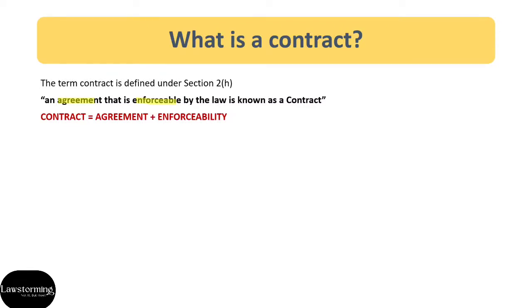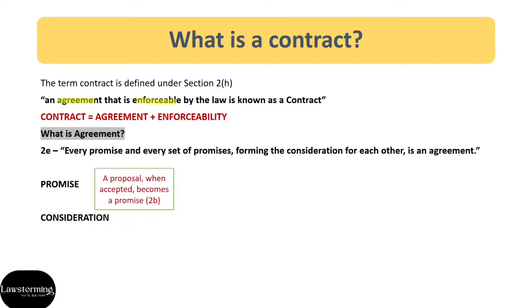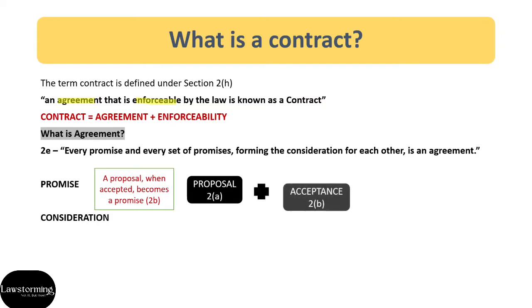Then the question arises, what is agreement? Section 2E defines agreement as every promise and every set of promises forming the consideration for each other is an agreement. So the first important element of the definition of agreement is promise, and the second is consideration. Now, what is a promise? As per Section 2B, a promise is a proposal when accepted — so promise is nothing but proposal plus acceptance of that proposal.